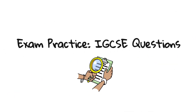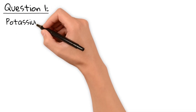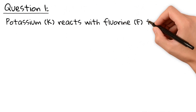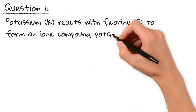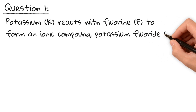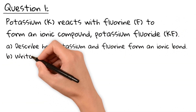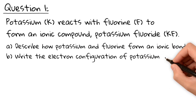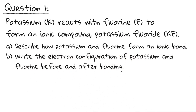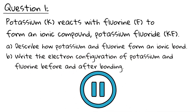Now let's test your understanding with some IGCSE-style questions. Grab a pen and paper and try them out. Question 1: Potassium reacts with fluorine to form an ionic compound — potassium fluoride. A: Describe how potassium and fluorine form an ionic bond. B: Write the electron configuration of potassium and fluorine before and after bonding. Pause the video and give it a try.